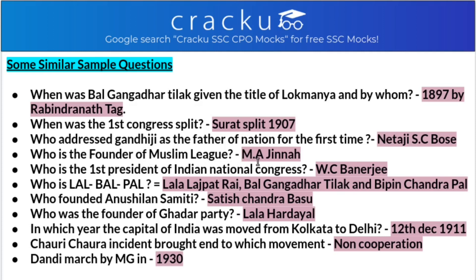Who is the founder of the Muslim League? The founder of the Muslim League is MA Jinnah, that is Mohammad Ali Jinnah. Who is the first president of the Indian National Congress? He is WC Banerji, that is Umesh Chandra Banerji. Who is Lal Bal Pal? Lal Bal Pal is the combination of three freedom fighters: Lala Lajpat Rai, Bal Gangadhar Tilak, and Bipin Chandra Pal. Who founded the Anushilan Samiti in India? The one who founded the Anushilan Samiti in India is Satish Chandra Basu.